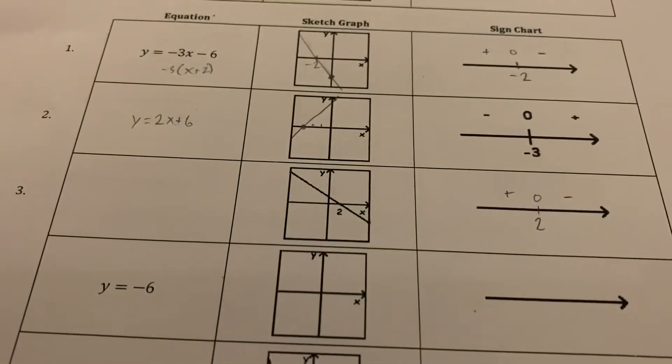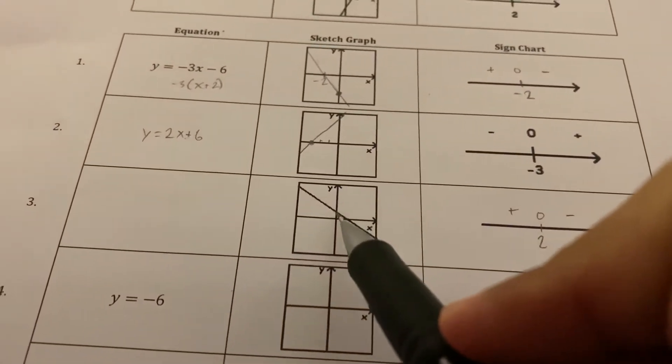Okay, so the y-intercept, it looks like it's one, so it's gonna have a plus one at the end.